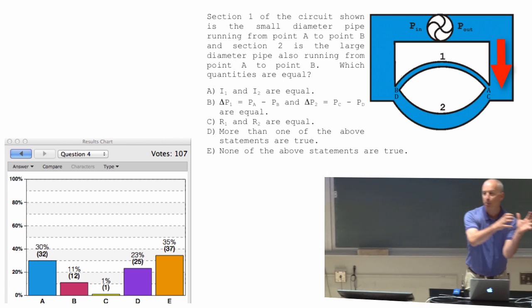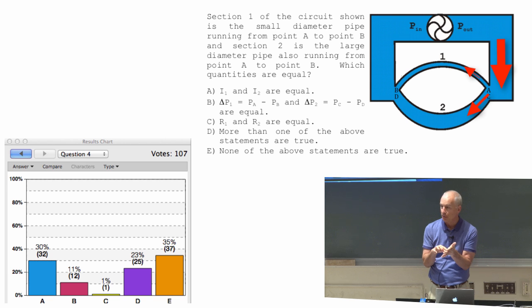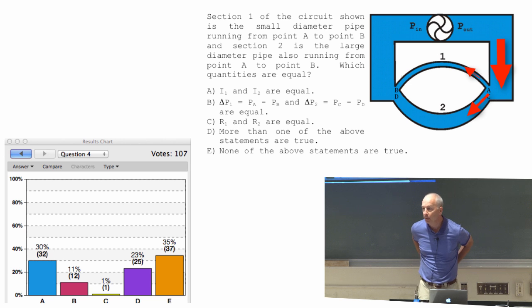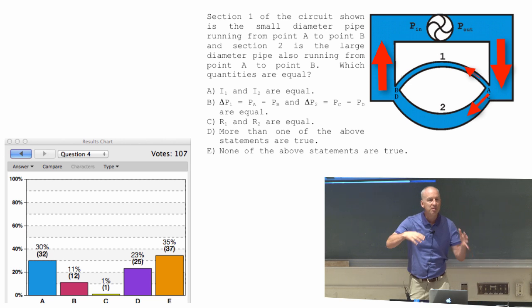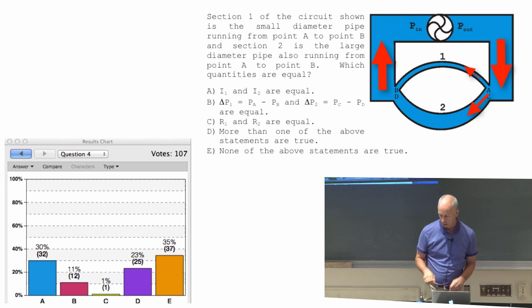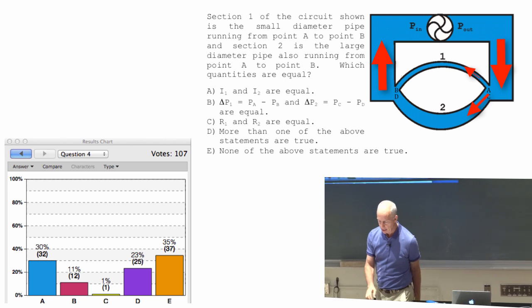So the current that the pump pushes out gets split into two unequal pieces. A small piece of current through I1, and a much bigger flow rate through I2. And then it comes back together again, and then it's the total current again. At least that's one way of describing what's going on there. Any other questions?